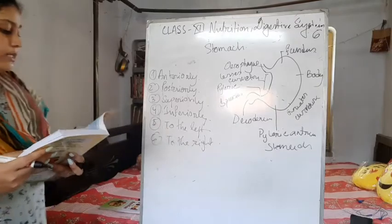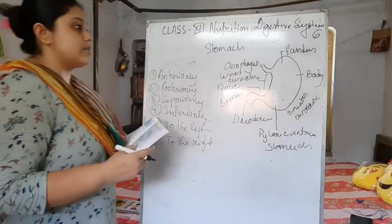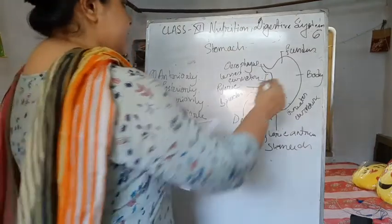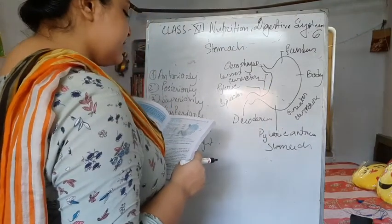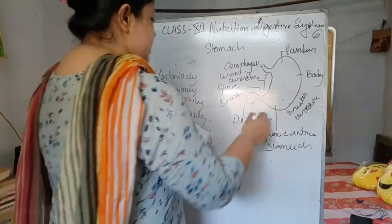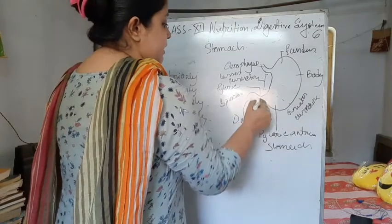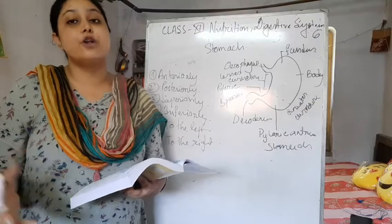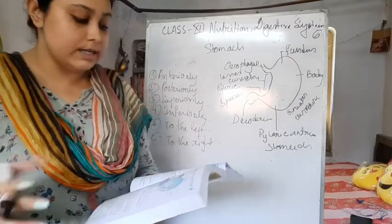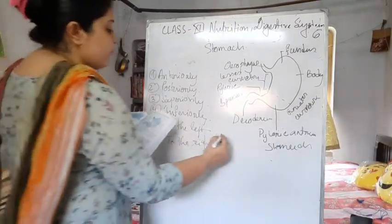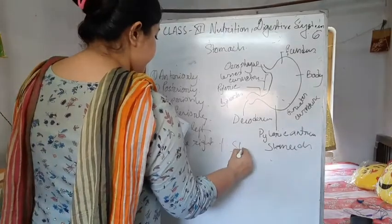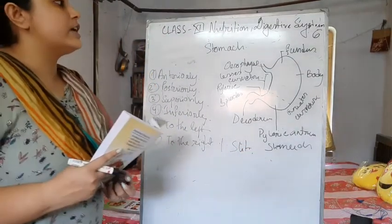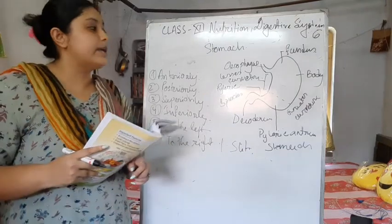The stomach is divided into three regions: the fundus, the body, and the antrum. The antrum is on the left part. The size of the stomach varies with the volume of food consumed — it may be around 1.5 litres. The food we consume is stored in the stomach.